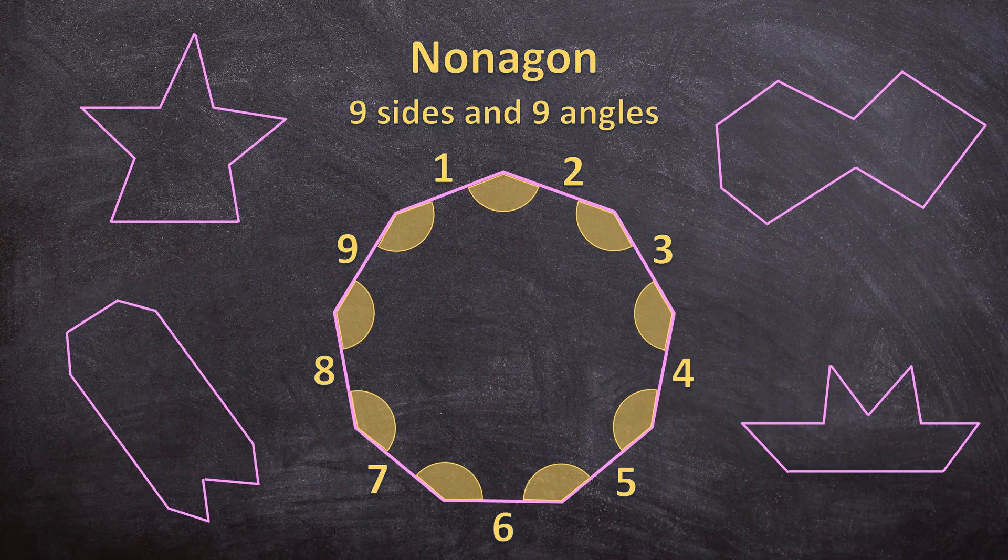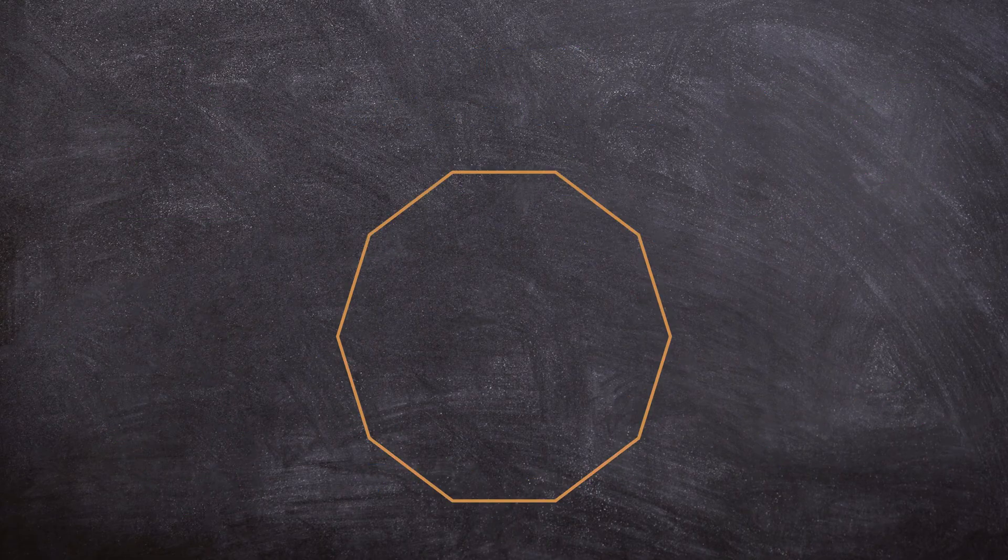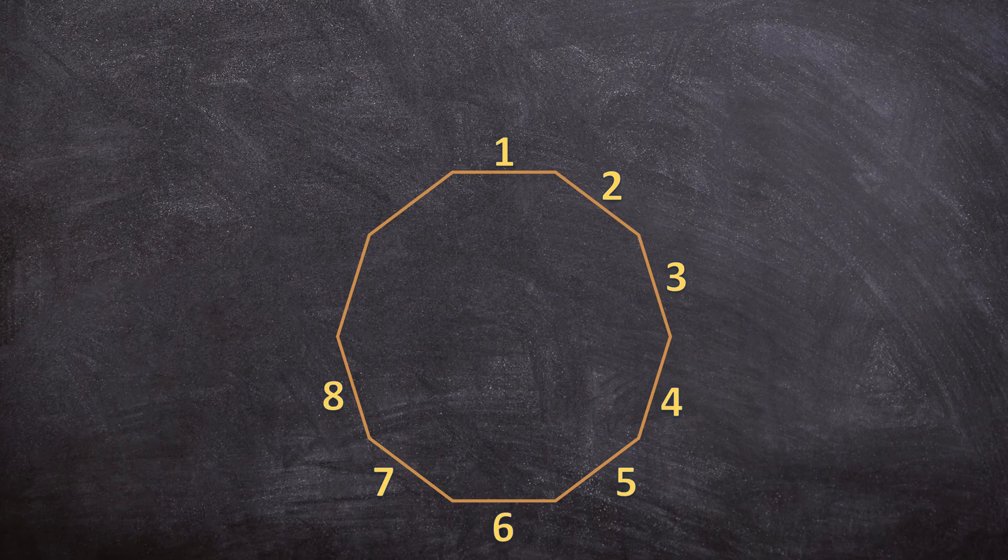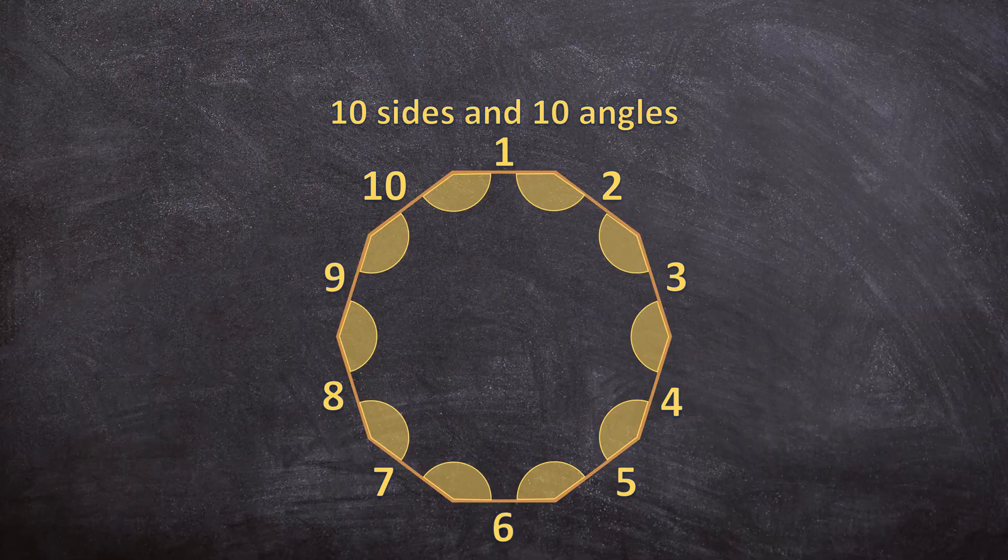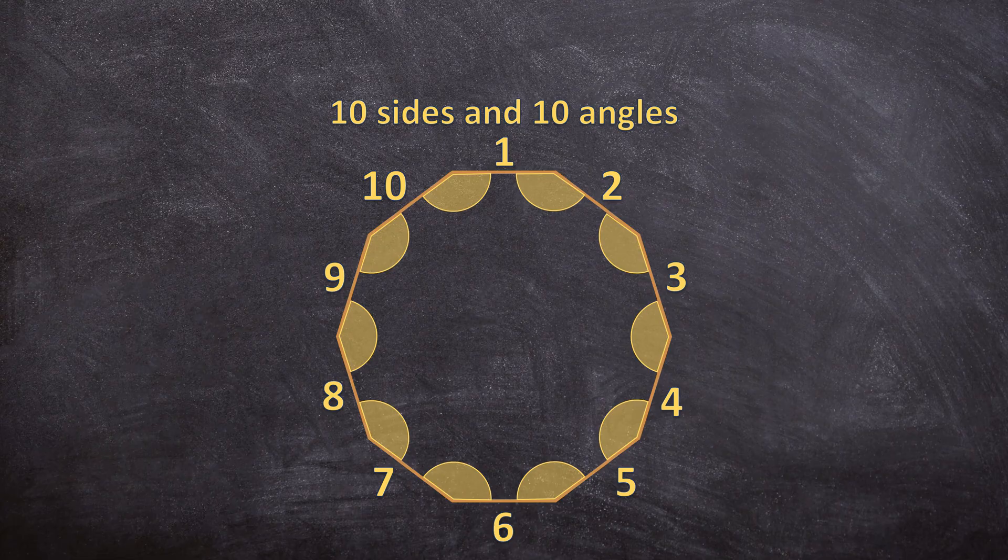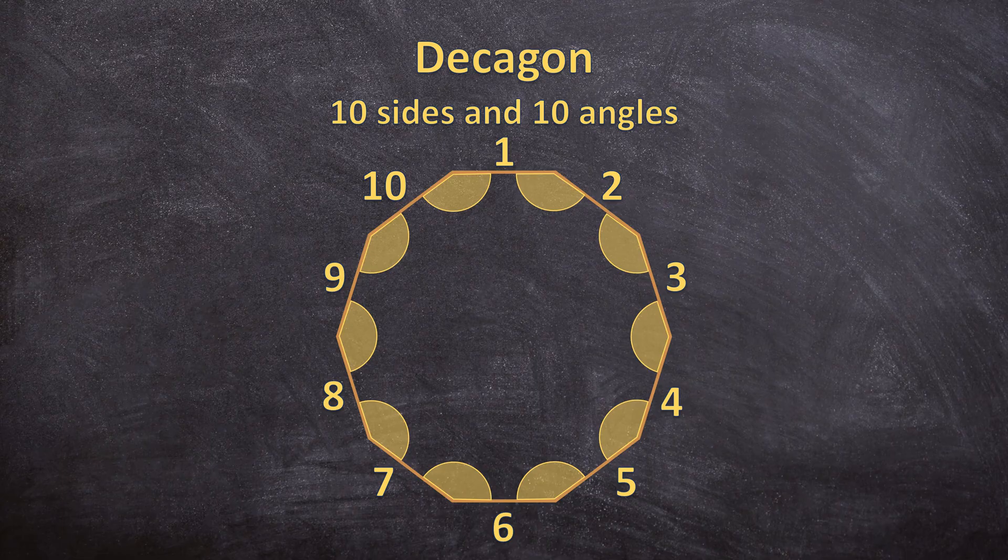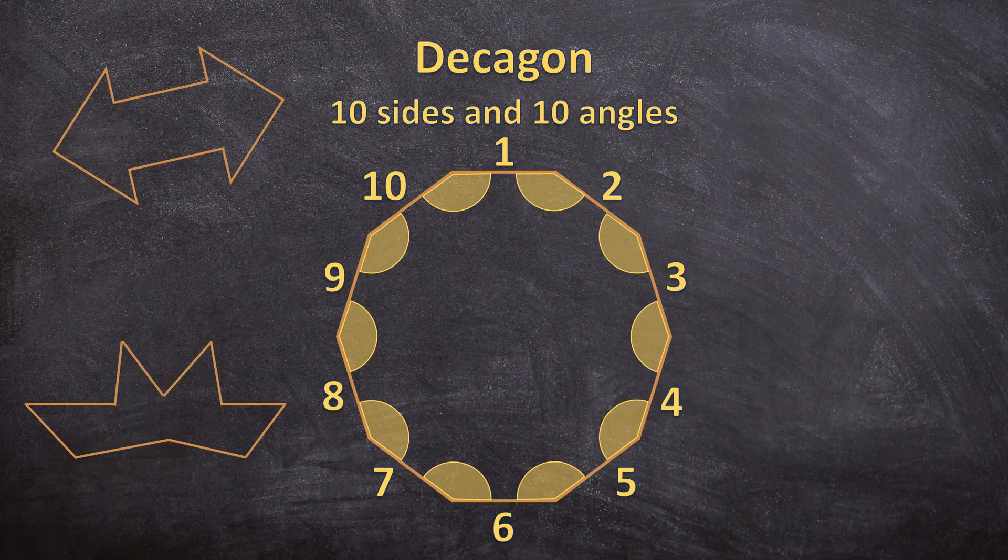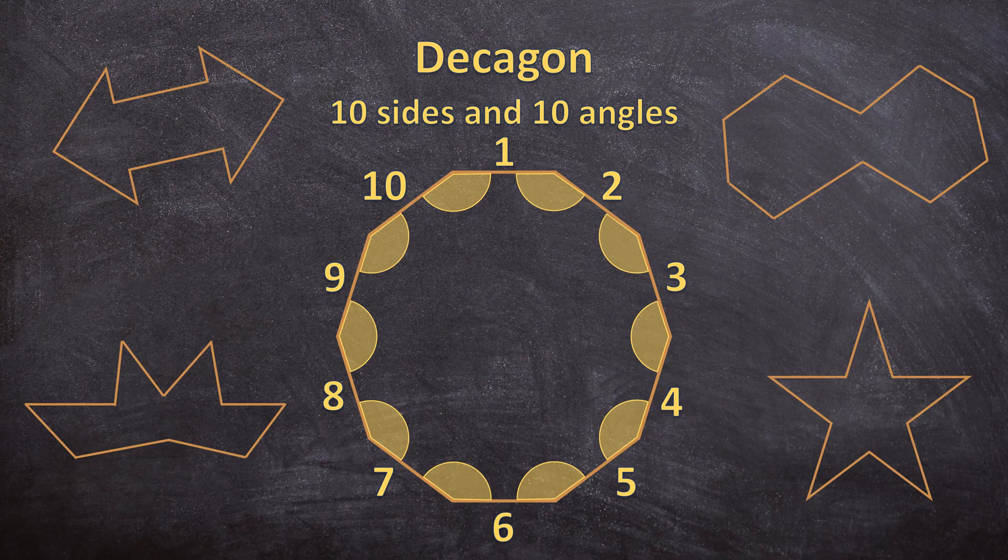And for the last polygon we will be talking about today. This polygon has 10 sides and it also has 10 angles. So 10 sides and 10 angles. And this is called a decagon. And here are a few more examples of a decagon. They all have 10 sides and 10 angles.